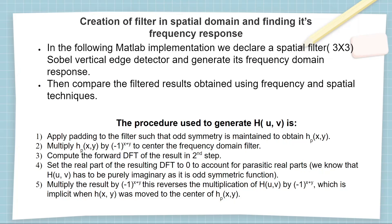The steps to obtain the frequency response of the Sobel vertical edge detector are: apply padding to the spatial domain filter such that odd symmetry is maintained, resulting in hp(x,y). Multiply the padded filter with (-1)^(x+y) to center its frequency domain representation. Compute the forward DFT, then set the real part of the computed DFT to zero, because as the filter is odd-symmetric it must contain only imaginary parts. Finally multiply the result by (-1)^(x+y) to reverse the earlier multiplication.